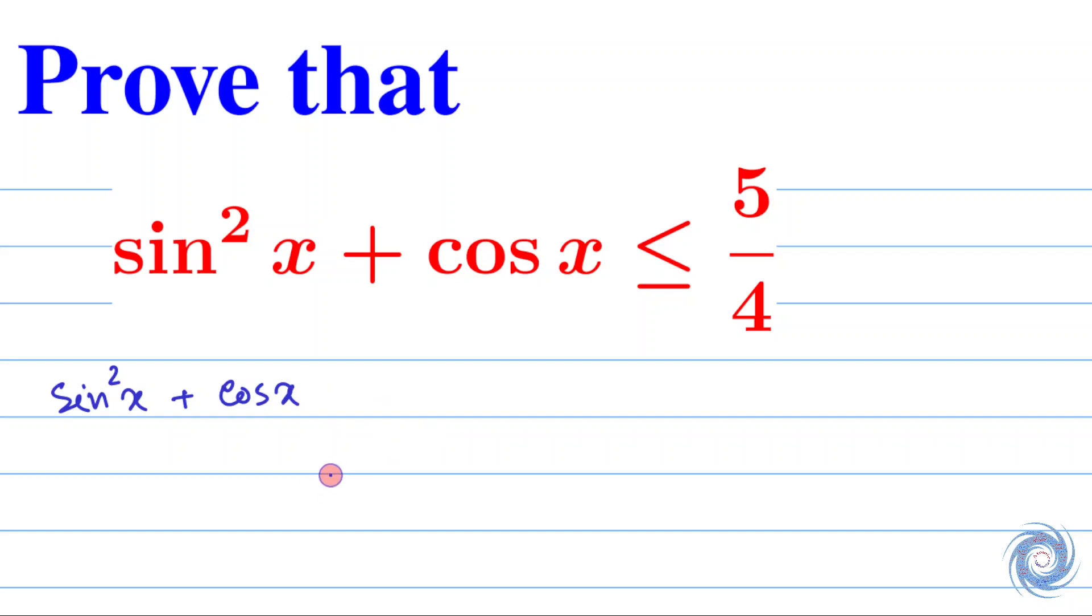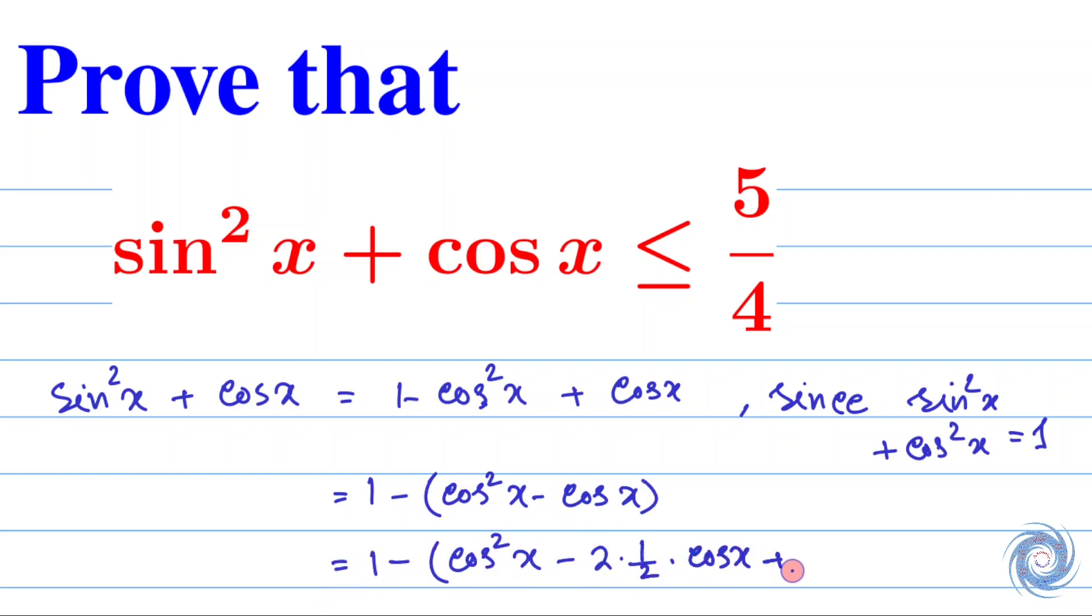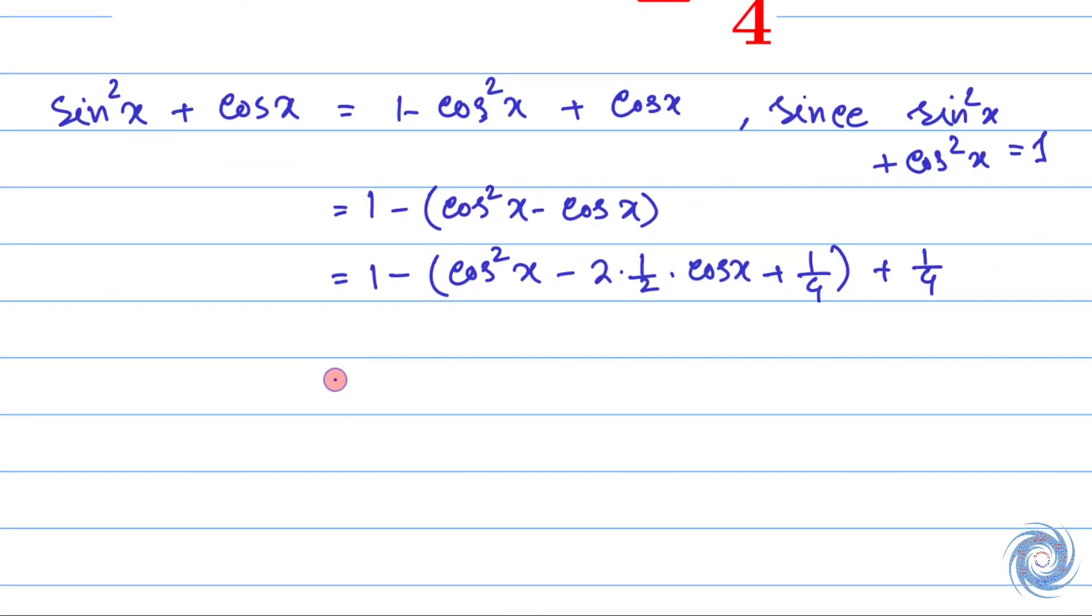Now we will use the fact that sin²x + cos²x = 1. So from here we have sin²x = 1 - cos²x. And from here we have sin²x + cos x = 1 - cos²x + cos x, so finally we have 5/4 - (cos x - 1/2)².